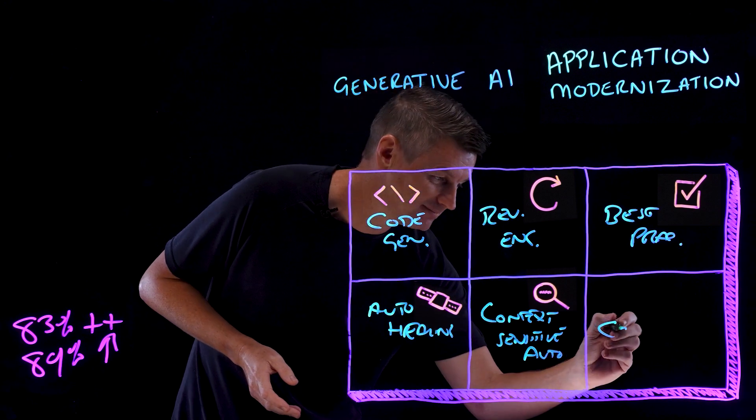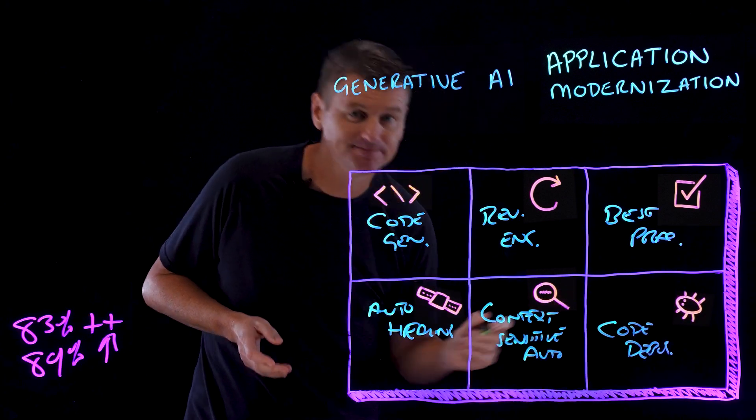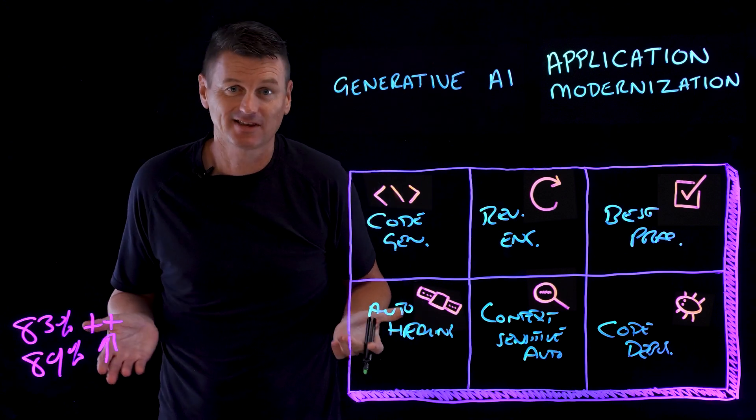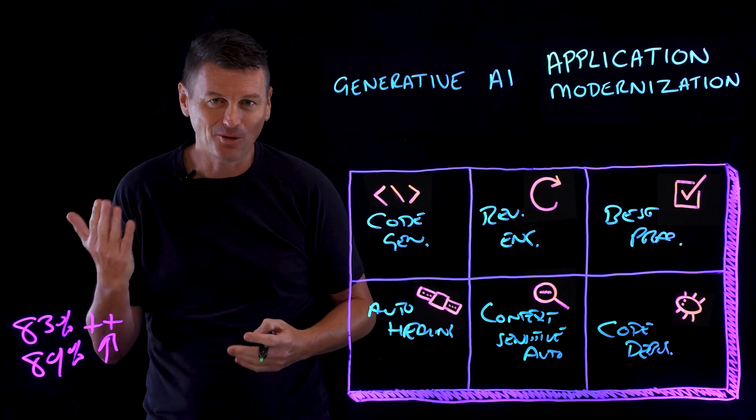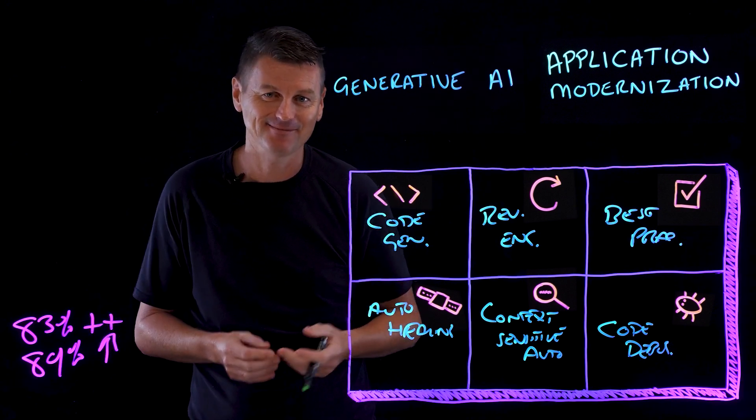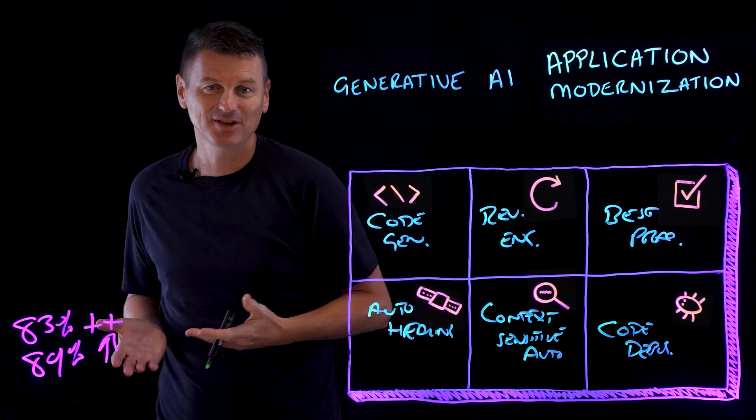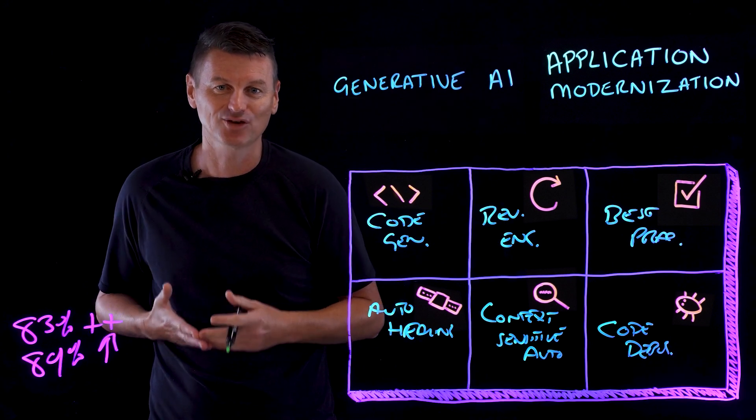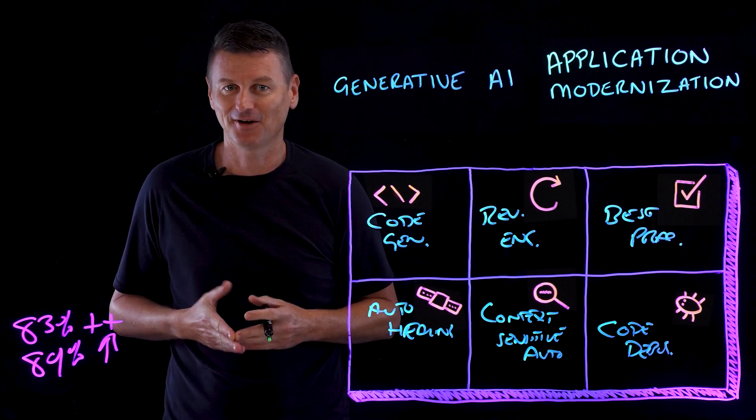And then, finally, we've got code debugging. Debugging, that's a time-intensive process at the best of times, but throw in interfacing old code with new tech, things don't exactly get any easier. Fortunately, generative AI can analyze code structures, system interactions, and even user behaviors to quickly identify bugs, bottlenecks, or potential areas of improvement.